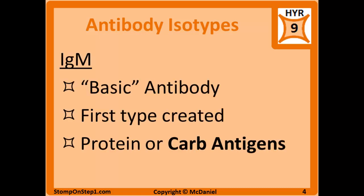IgM is the first type of antibody produced following exposure to any antigen and can be thought of as the basic antibody. Its activation is helper T cell independent, and therefore it can be triggered by exposure to peptide or carbohydrate antigens, unlike some of the other antibodies.